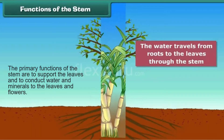Function of the stem: the water travels from roots to the leaf through the stem. The primary functions of the stem are to support the leaves and to conduct water and minerals to the leaves and flower.